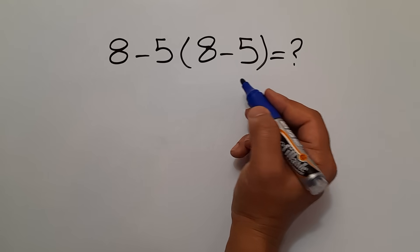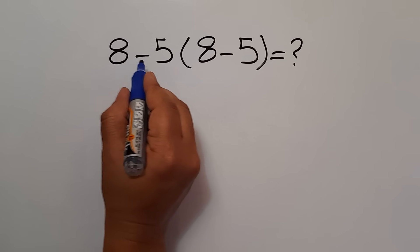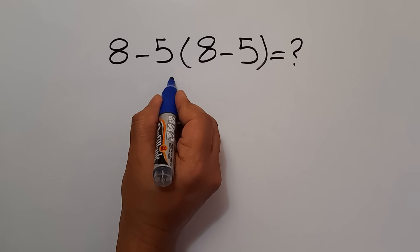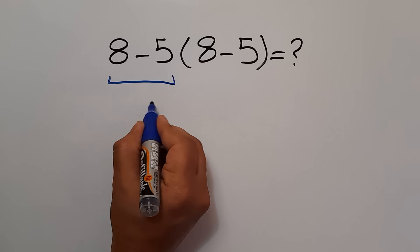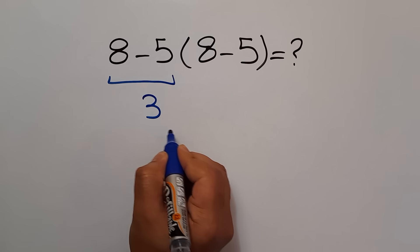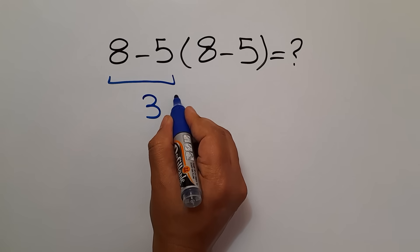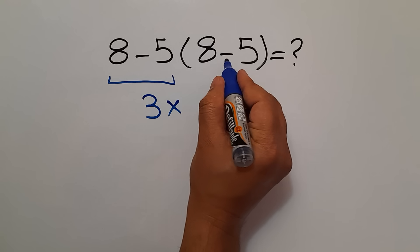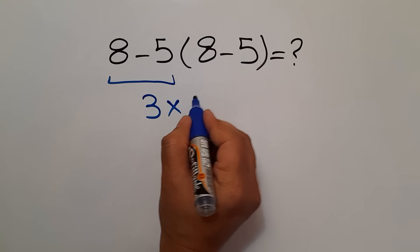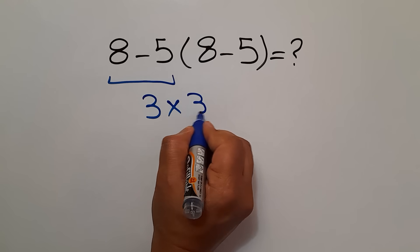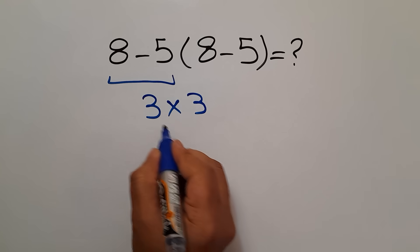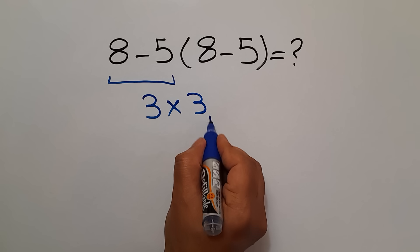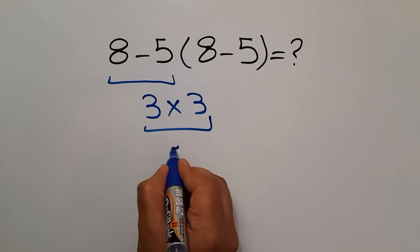Let's go ahead and get started. 8 minus 5 equals 3. And 3 times 8 minus 5 equals 3 again. So, 3 times 3, which equals 9.